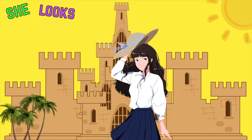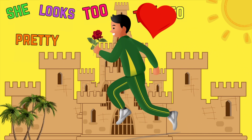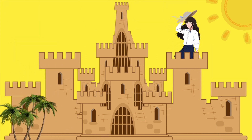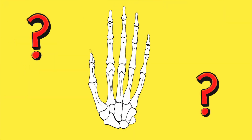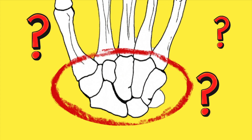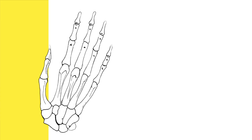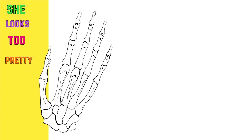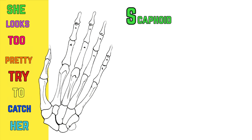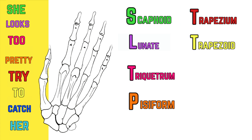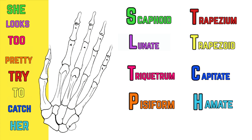She looks too pretty. Try to catch her. So I'm guessing you're wondering what that has to do with the carpal bones. Well, I'll tell you — it's a mnemonic, a trick to help you memorize something. She looks too pretty. Try to catch her. The beginning letter of each of these words corresponds with the beginning letter of each of the eight carpal bones in anatomical order according to how they sit in the wrist. Let's take a closer look.